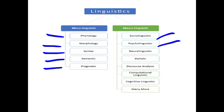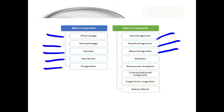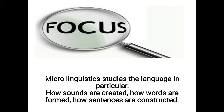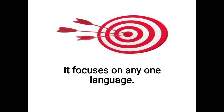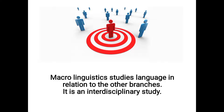In macro linguistics, we have sociolinguistics, psycholinguistics, neurolinguistics, and so on. Micro linguistics studies a language with a focus on that language only — how sounds are created in a particular language, how words are formed, and how sentences are created and constructed. This focused study is known as micro linguistics.